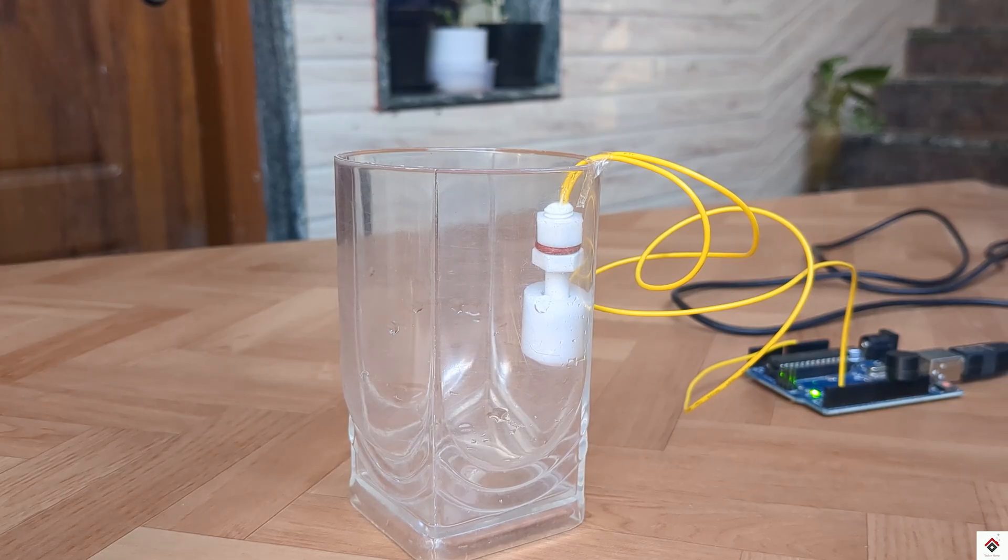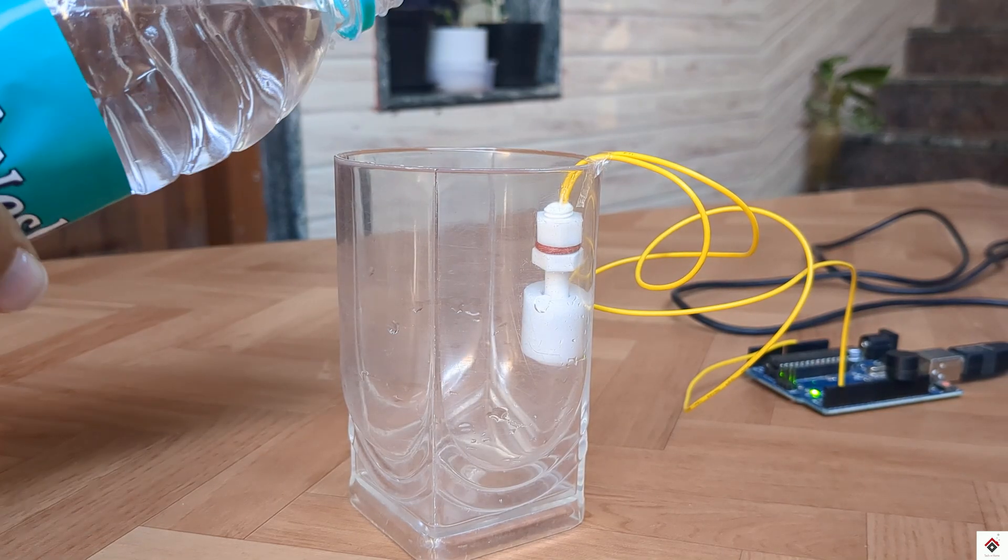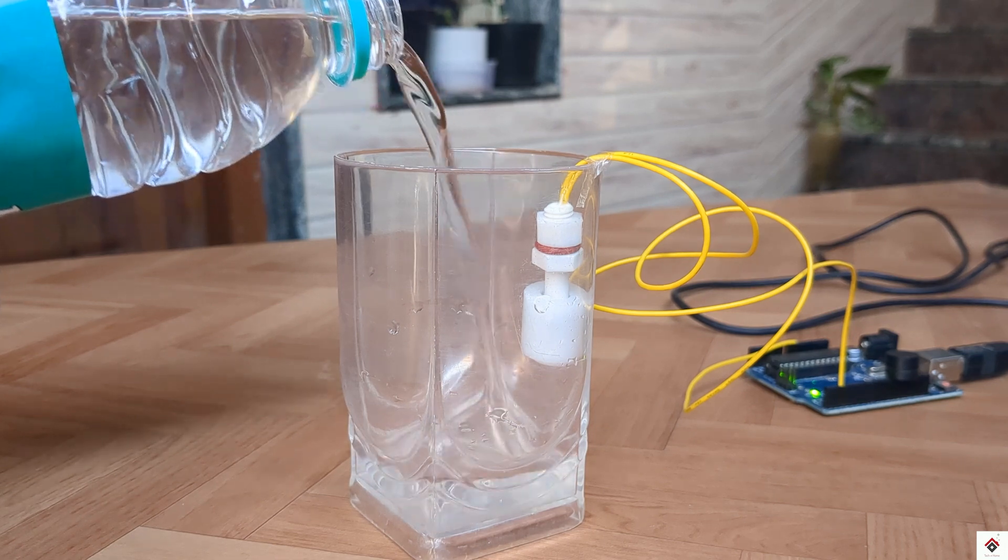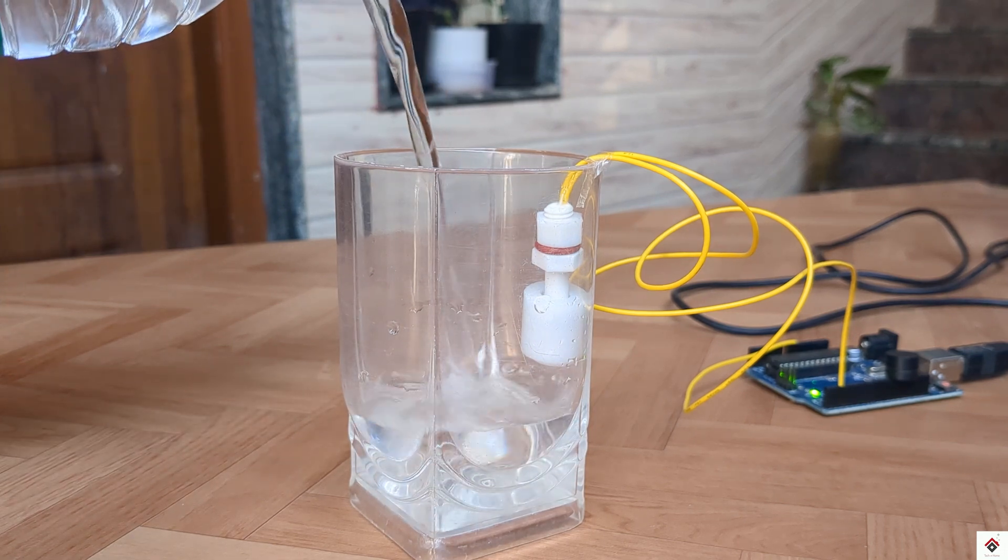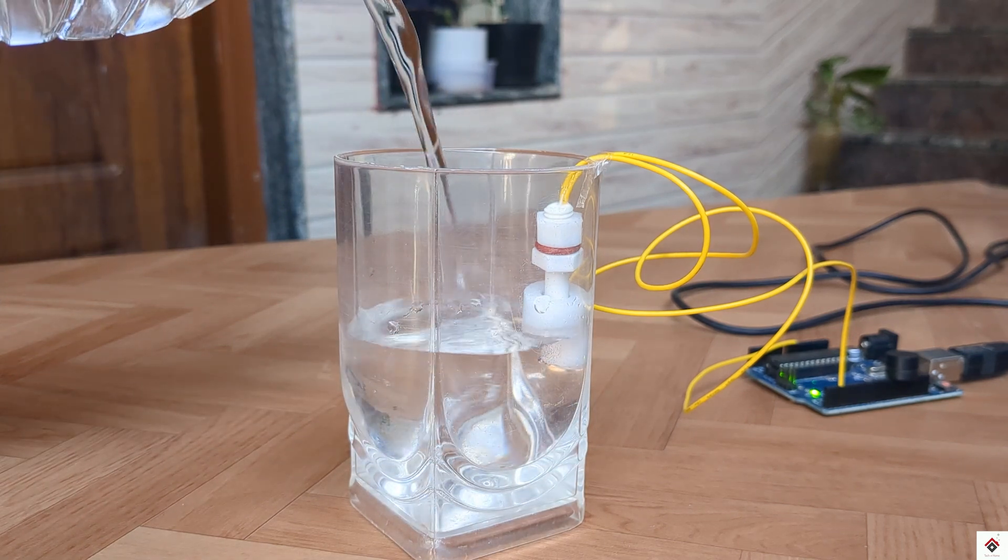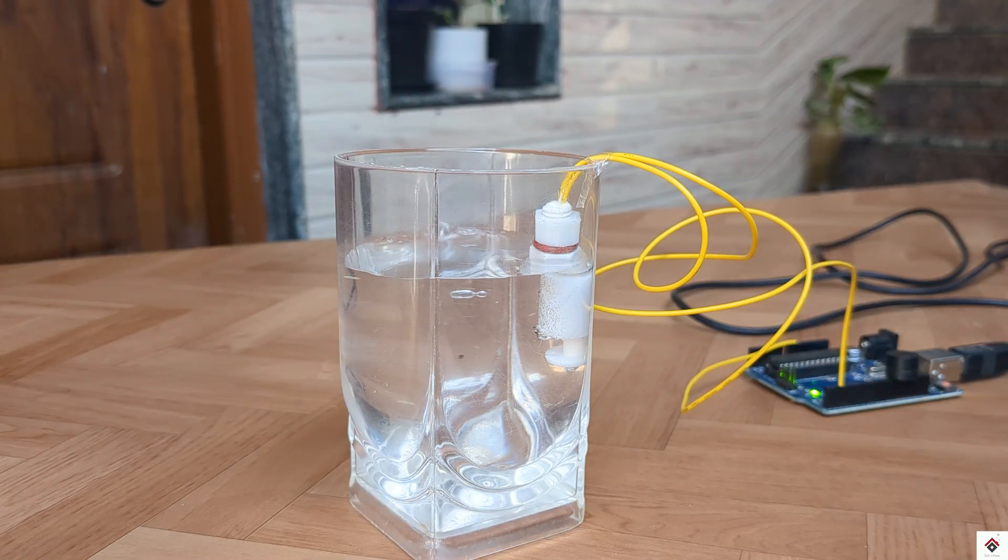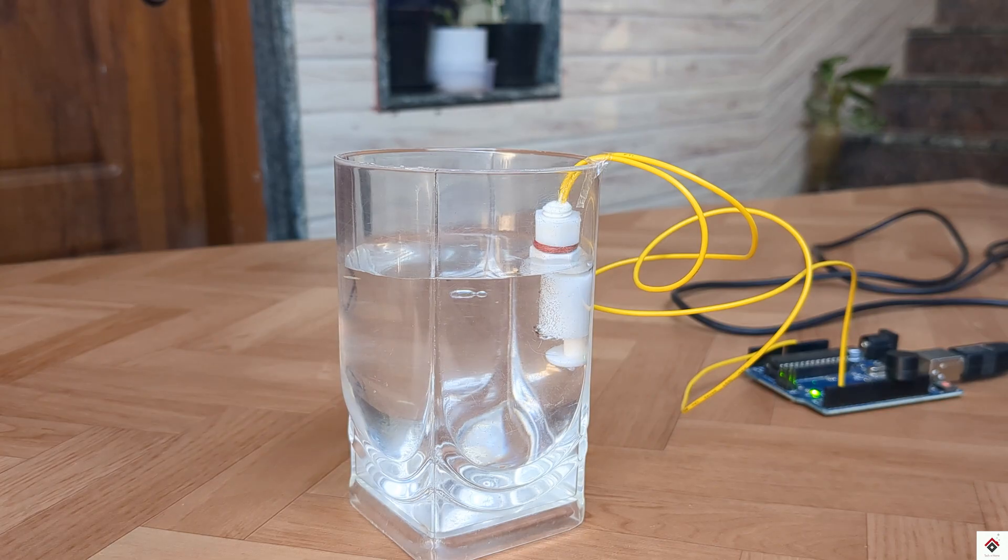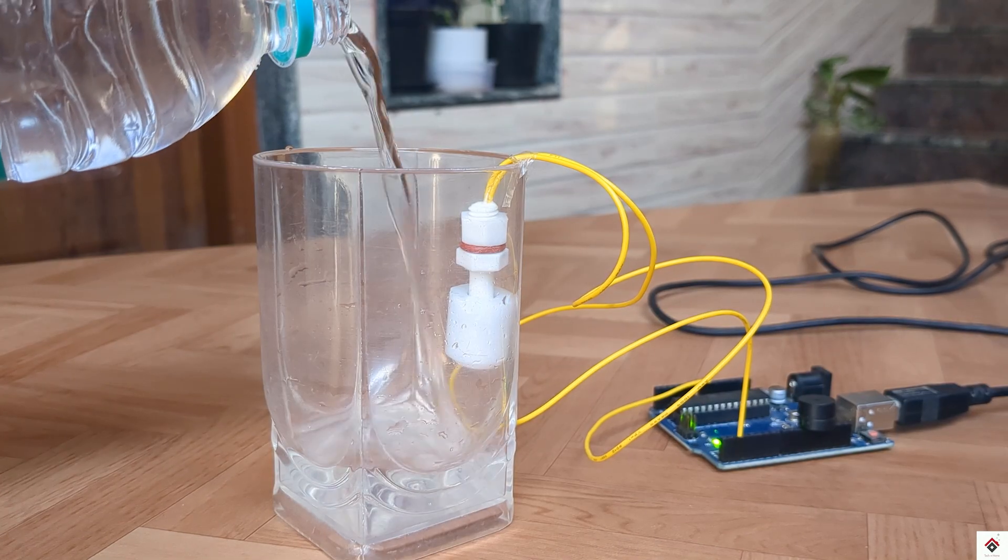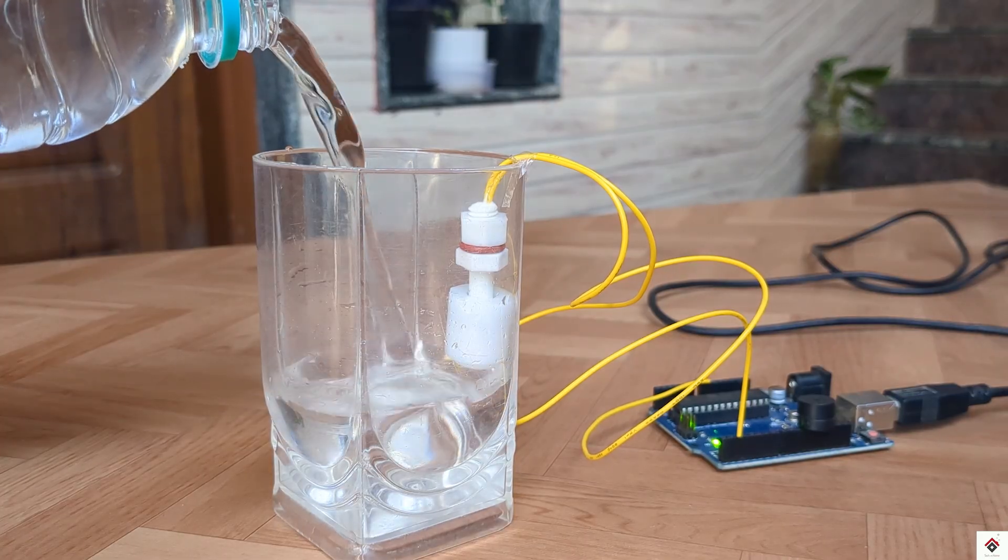You can also make it sound better with a combination of HIGH, LOW, and delay. I'll add some delay here. For proper demonstration, I've kept the sensor inside the glass. Once the water level increases and reaches the sensor, the buzzer starts making the sound. So this is how you can use this sensor for detecting the water level.